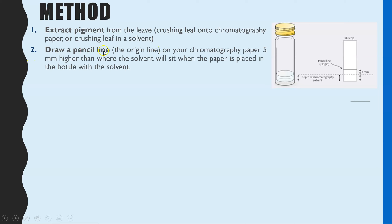The next step — whichever type of chromatography you're doing — is that the paper you're going to be using needs a pencil line drawn on it, which will be called the origin line. This should be about five millimeters higher than the level of the solvent, so that the solvent is below the pigment dot to start with, so it doesn't dissolve and wash it off the paper.